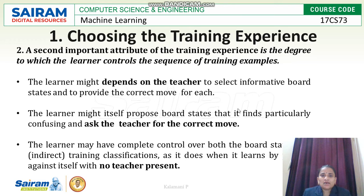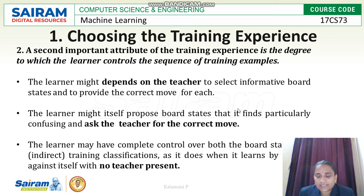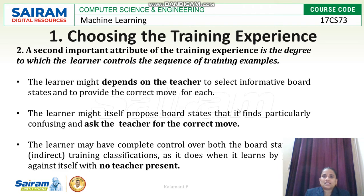The second attribute is the degree to which the learner controls the sequence of training examples. There are three cases: the learner depends on the teacher — by observing the teacher play, the learner understands each step and every state. Second, the learner plays the game with the help of the teacher — at each state, the teacher guides the learner on what the next move should be.